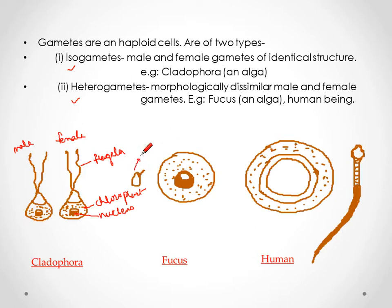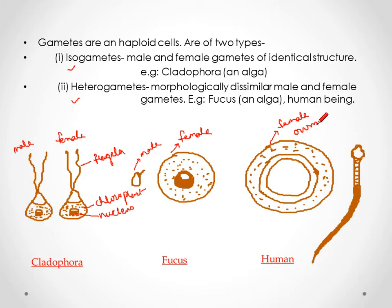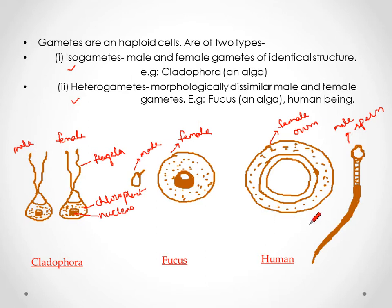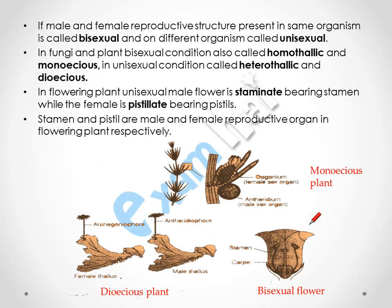In heterogametes, the male and female gametes are morphologically dissimilar to each other. In humans, the female gamete is the ovum and the male gamete is the sperm — these are heterogametes and are morphologically dissimilar to each other.